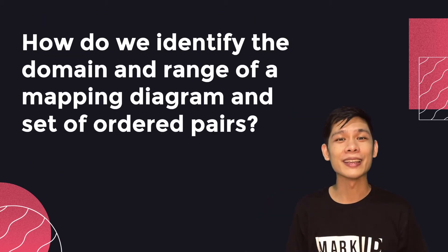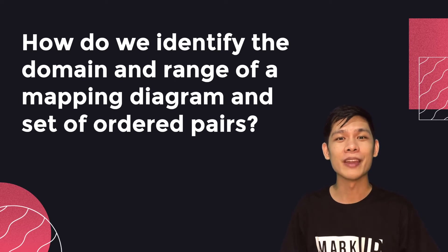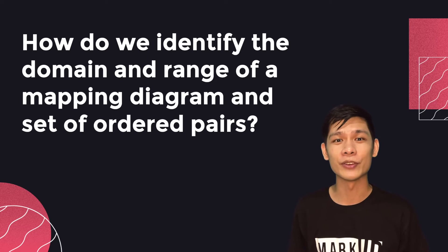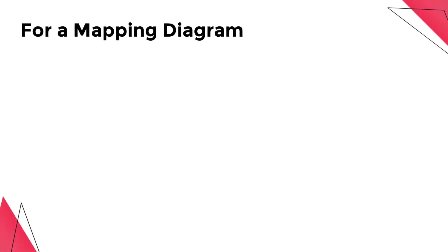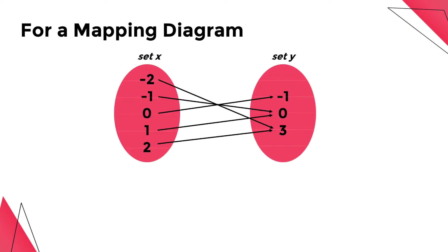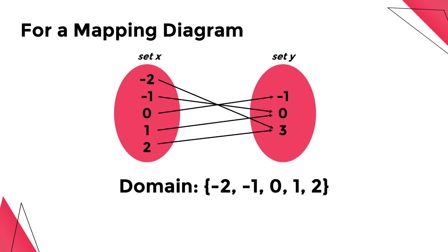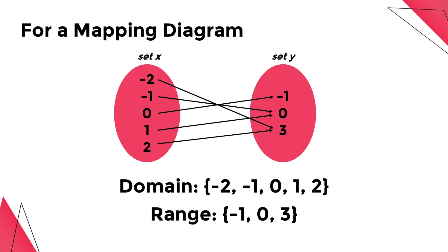How do we identify the domain and range of a given set of ordered pairs in a mapping diagram? If it is possible to list down all the elements representing the domain and range, we use braces to enclose these elements. For a mapping diagram, we simply list down the elements on the first set, or set x, for the domain. Then the elements on the second set, or set y, represent the range.